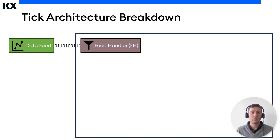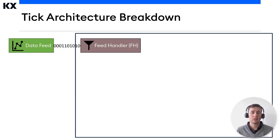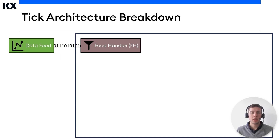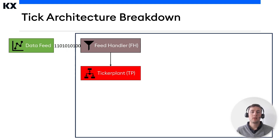A feed handler is a process which captures external data and translates it into KDB Plus messages. Feed handlers are adapters which take the data and parse it from the incoming format to the format which can be ingested by KDB Plus processes further downstream. Multiple feed handlers can be used to gather data from a number of different sources. The most frequently used technologies for feed handlers are C and Java. Feed handlers receive the data, extract the fields of interest, perform some data type casting, and then reorder the fields to match with corresponding table schemas. It then pushes this massaged data to a ticker plant in column-orientated list format.